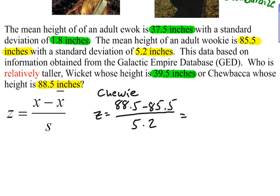So, let's go ahead and take a look at this, do the calculations. 88.5 minus 85.5, that's 3, divided by 5.2, gives us 0.577. We'll go out three decimal places. Since this is the value we're concerned with, we'll go out three decimal places, 0.577.